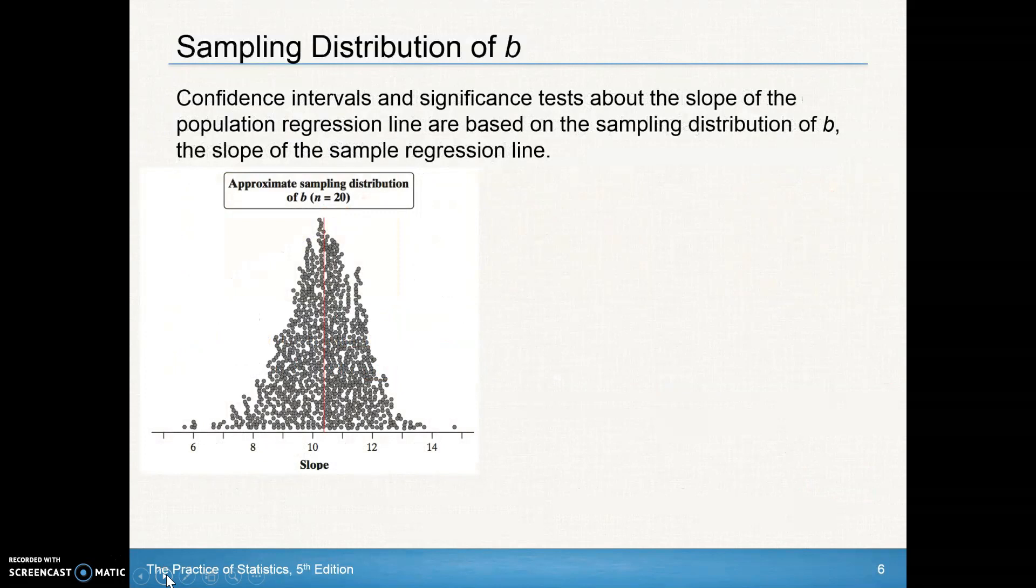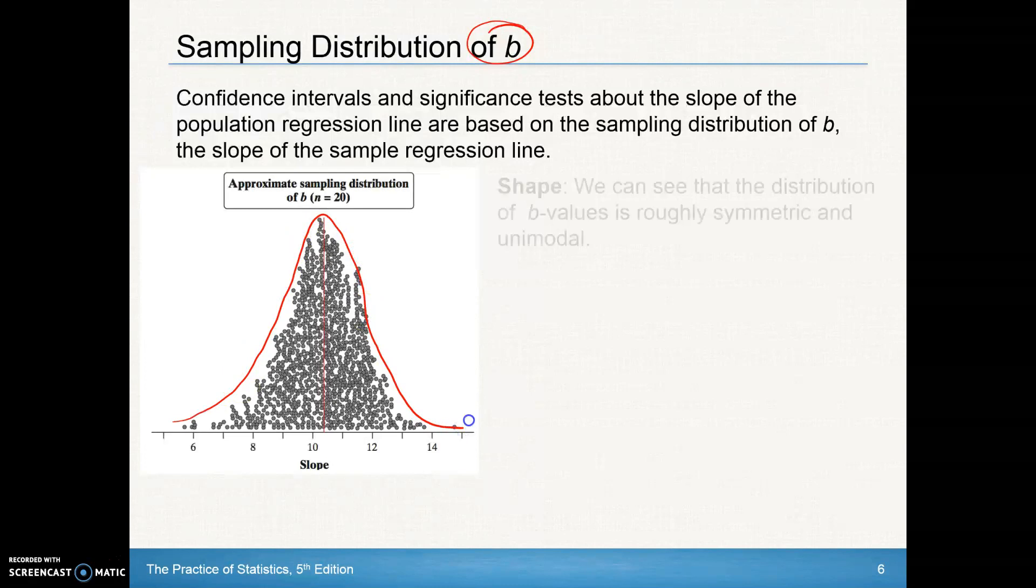But if we were to take many, many of these Bs, from let's say 1,000, you got 1,000 different people that did sample sizes of 20, and we plotted it all out here. Now what we can start to see is we can start to look at the shape of this distribution. We can see the distribution of the B values is roughly symmetric and unimodal. We should get most of our, most people should get it close to what the true one is, though we do get some people that will be off a little bit, but not very many. So that's why we get the normalish looking curve here.